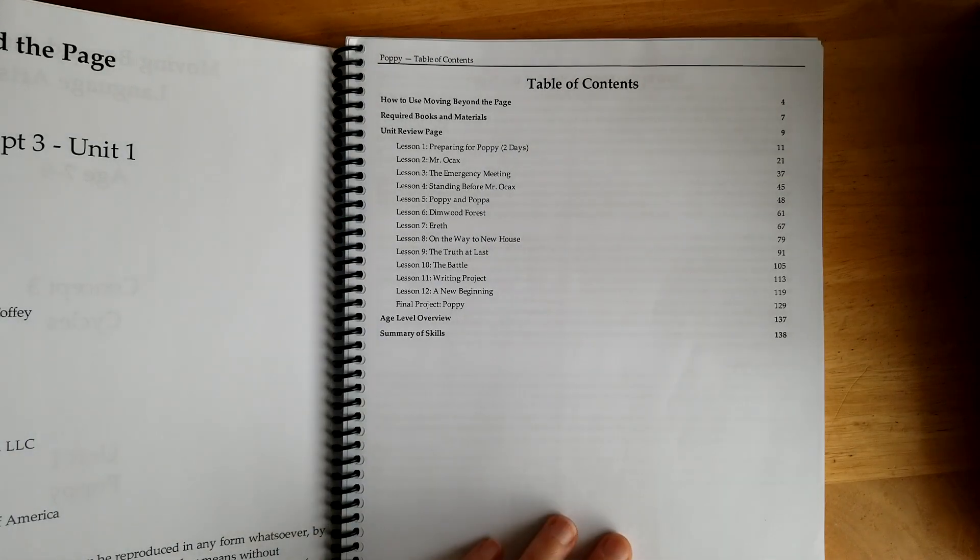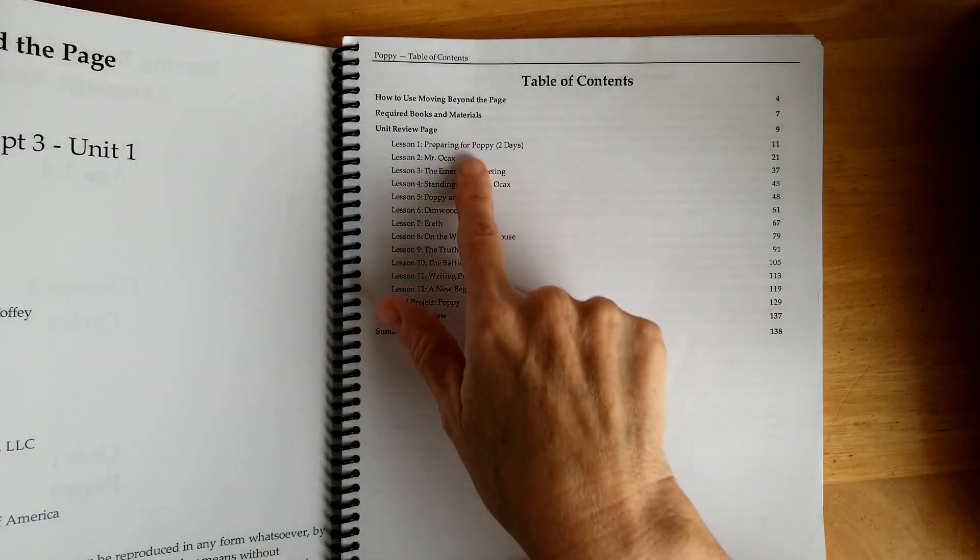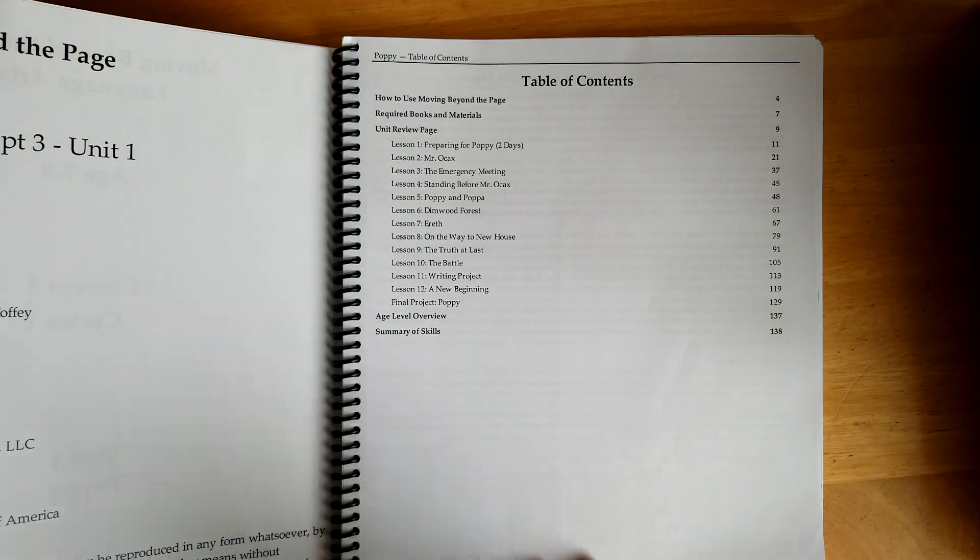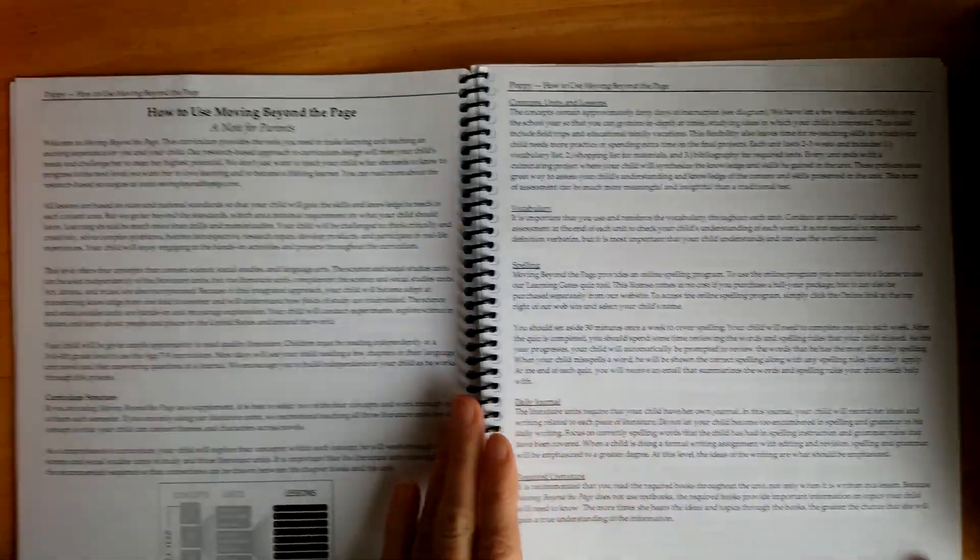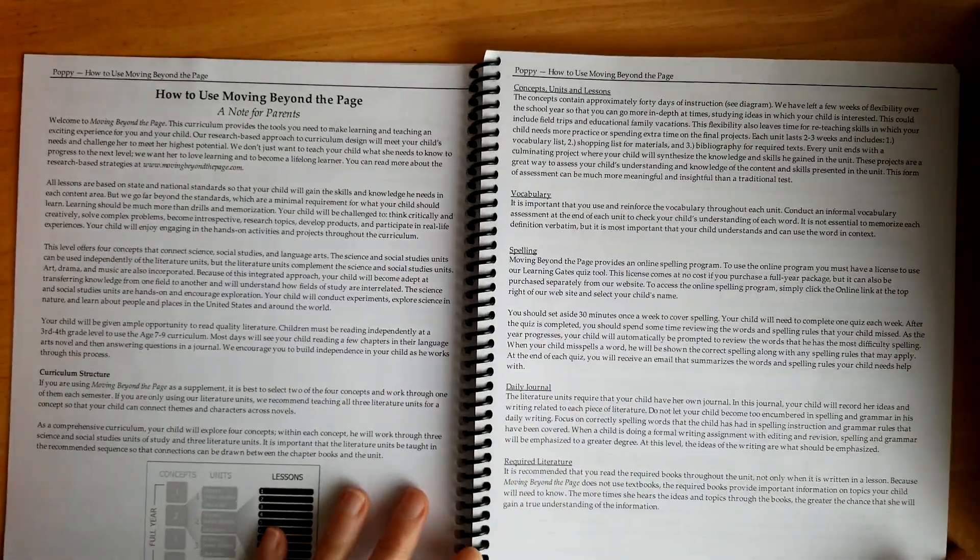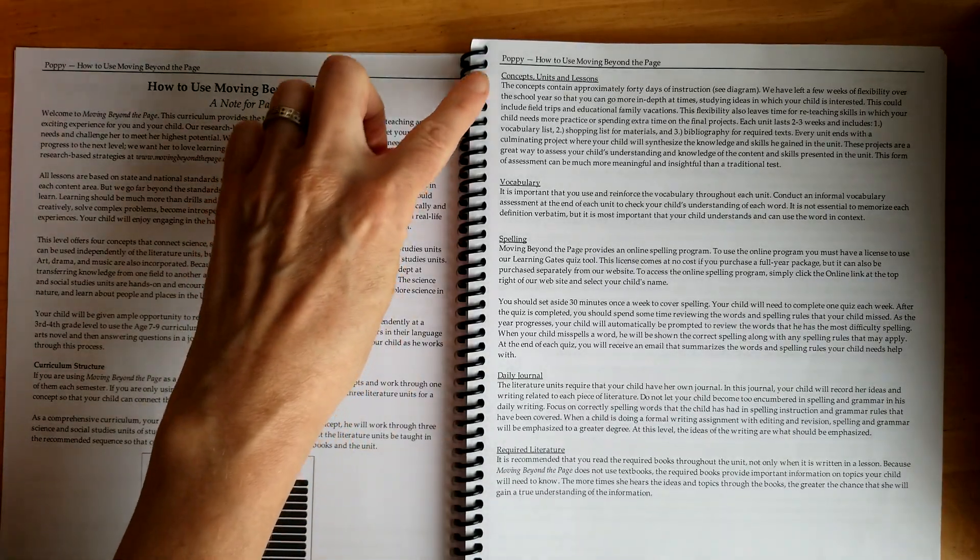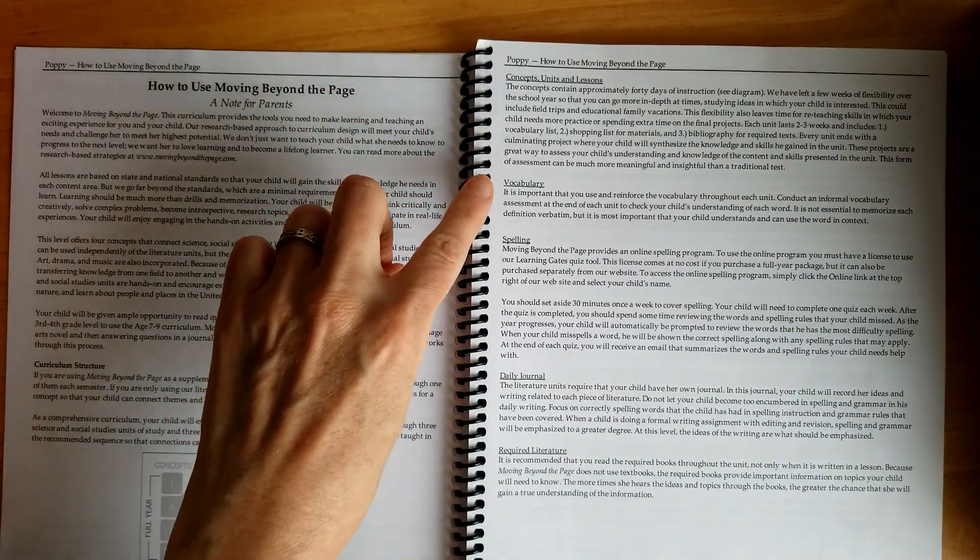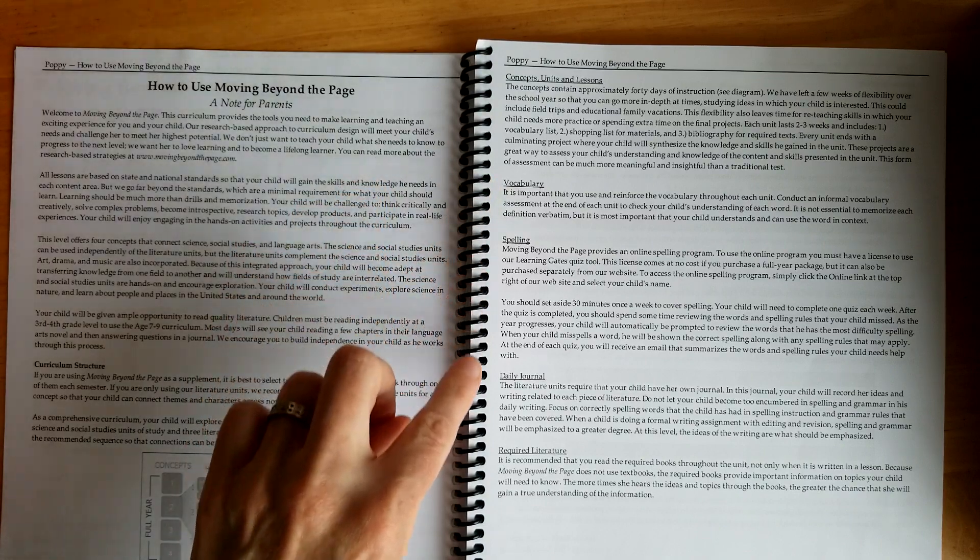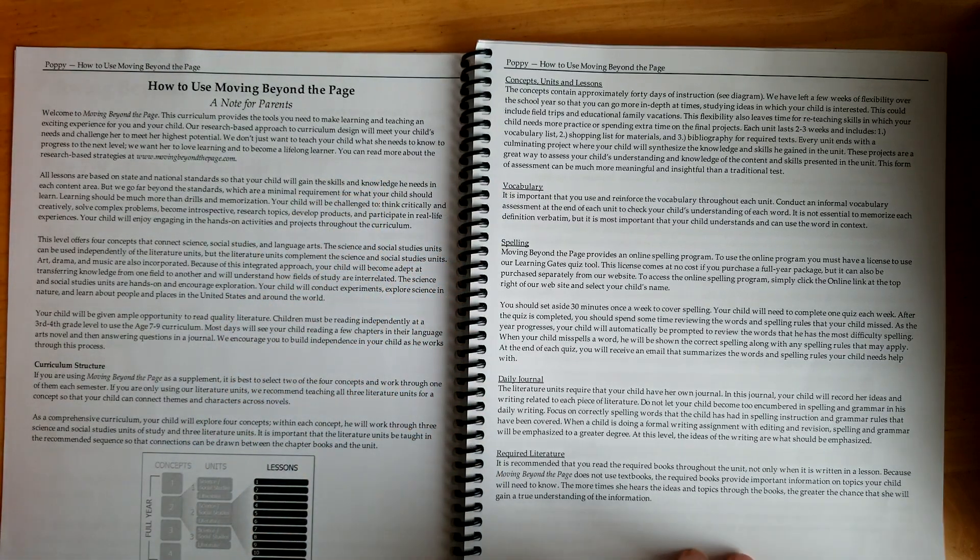So here is the table of contents. It talks about what you're going to cover in each of the lessons, and here they go over how to use the Moving Beyond the Page curriculum. There's concepts, units, and lessons, vocabulary, spelling, daily journal, and required literature.